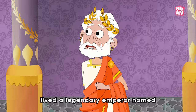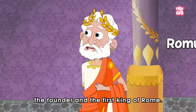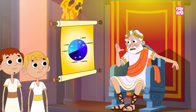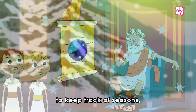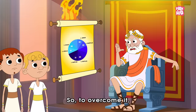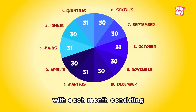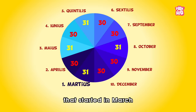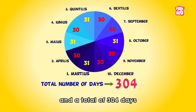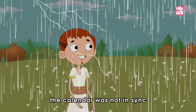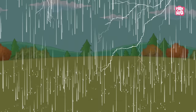To answer that, we need to go back in time into the Roman era. A long time ago lived a legendary emperor named Romulus, the founder and the first king of Rome. Romulus found it challenging to keep track of seasons, festivals, and numerous ceremonies. So, to overcome it, he ordered a 10-month lunar calendar with each month consisting of either 30 or 31 days, starting in March and ending with December, for a total of 304 days. But the calendar was not in sync with the four seasons.